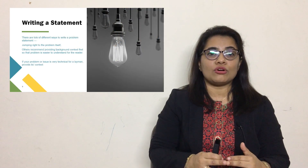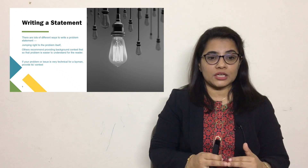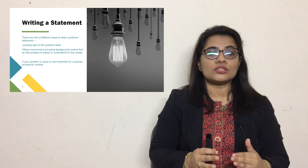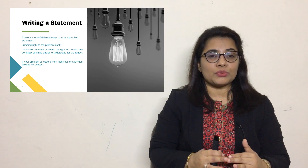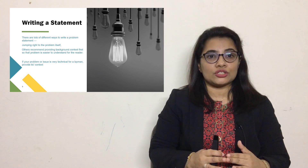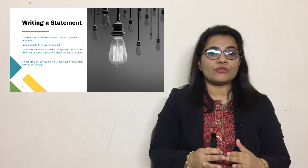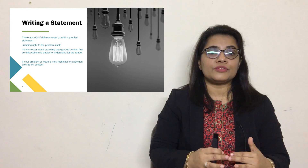There could be many ways of writing a problem statement, but the two most significant and commonly used ways are: first, you can directly jump into the problem statement and write the ideal situation, the gaps, and the consequences. However, if your problem is technical or difficult for a layman to understand, it is suggested that you first establish the context or background of your problem and then write the ideal situation and the remaining parts. For better quality, if your research area is very technical, mention the context first and the three parts afterward.